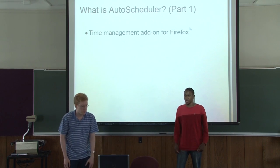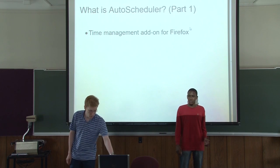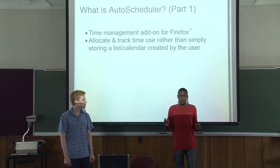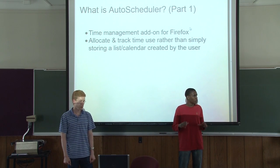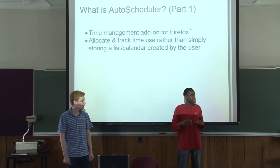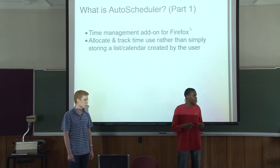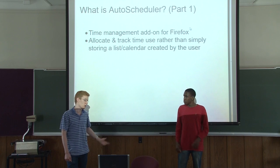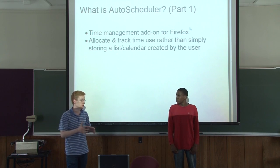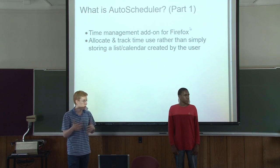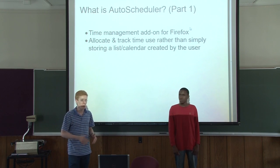So what is Autoscheduler? It's a time management add-on for Firefox that allocates and tracks your time as you browse. Rather than just making a calendar or a list like some of the other programs do, it sets up a schedule for you based on inputs that you provide, and it allocates your time rather than you having to do it yourself. So it can help reduce indecision and give you just what you need to do at the time you need to do it. If you know something you need to do, you can add it to the queue to determine exactly when you need to do it.